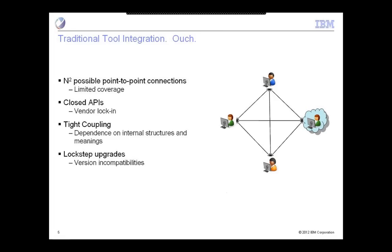With traditional tool integration, which I'm sure we all have done, there are N-squared possible point-to-point connections. We have to deal with closed APIs, things that may change from time to time, and that lock us into vendors. We have tight coupling, which can produce extraordinarily beautiful structures, but structures that are very difficult to change and adopt. And we don't have to do lock-step upgrades in OSLC like we often do in traditional tool integration.